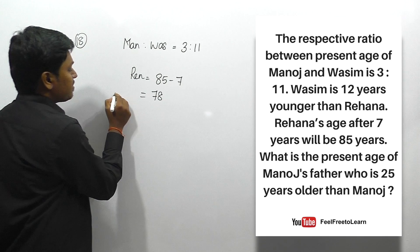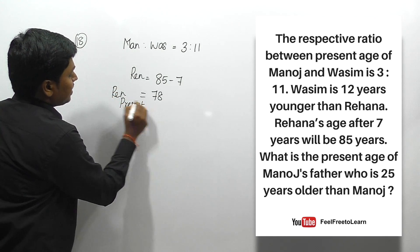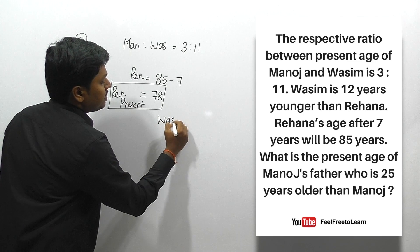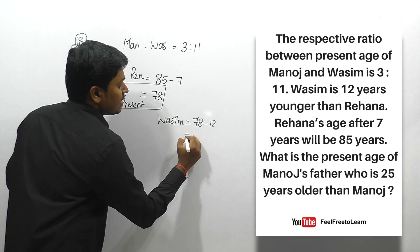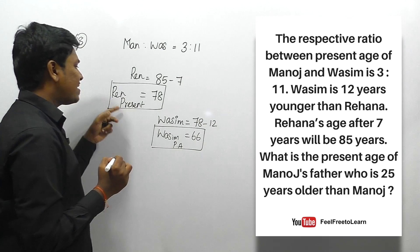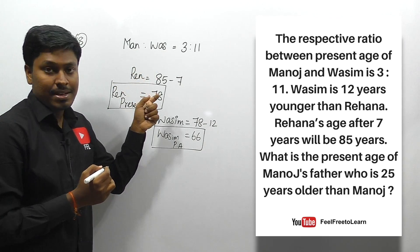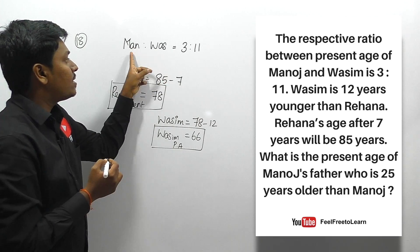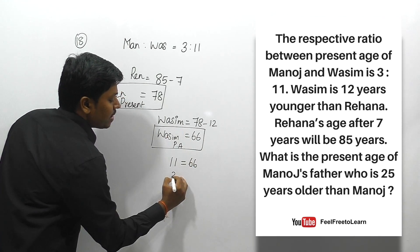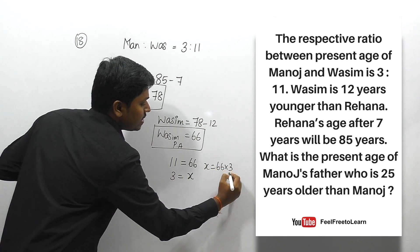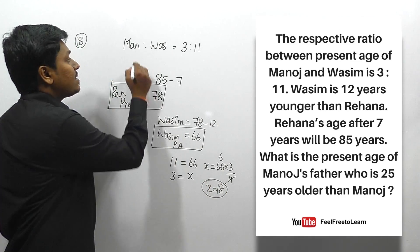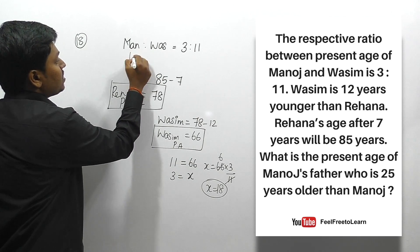Rina's present age is 78. Vasem is 12 years younger than Rina, so Vasem's present age is 78 − 12 = 66. The ratio of Manoj to Vasem is 3:11, so Vasem's 11 parts equal 66. Manoj's age = (66 × 3) / 11 = 18. So Manoj's present age is 18.